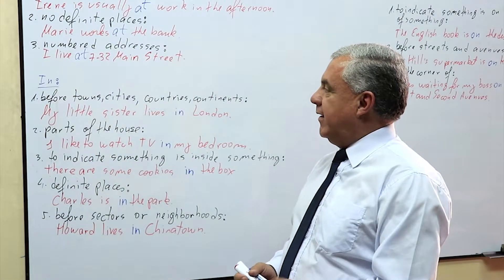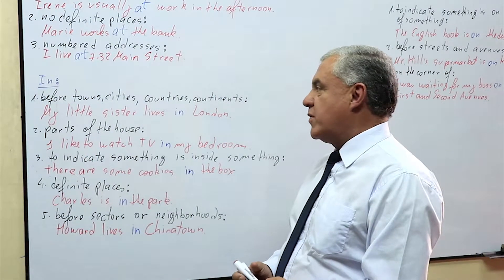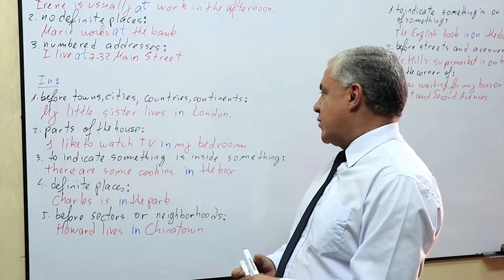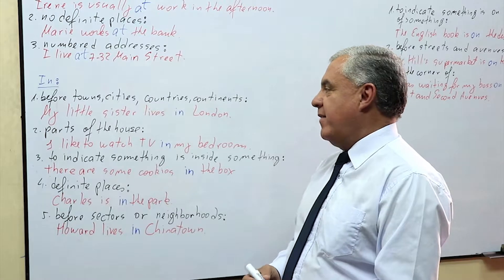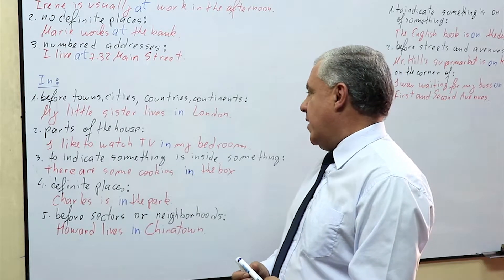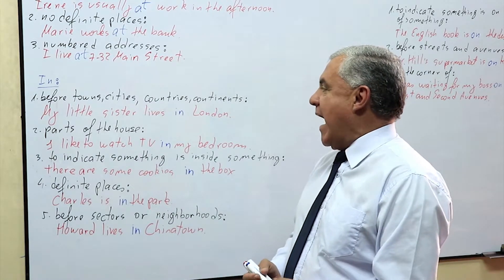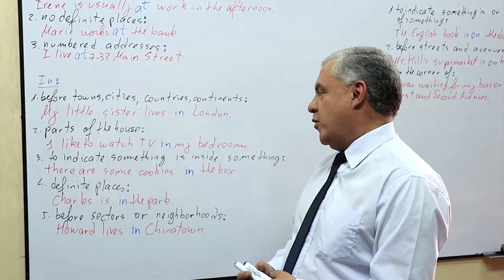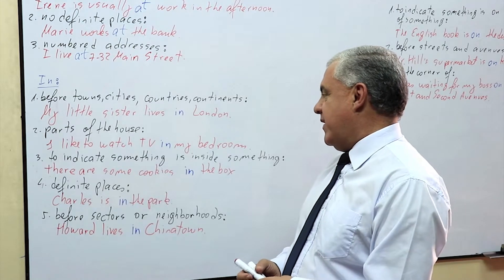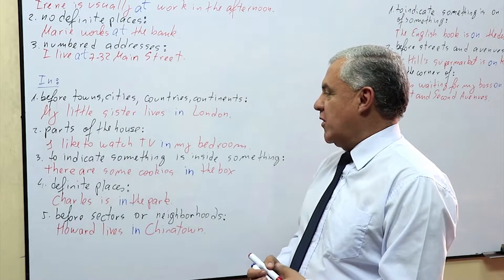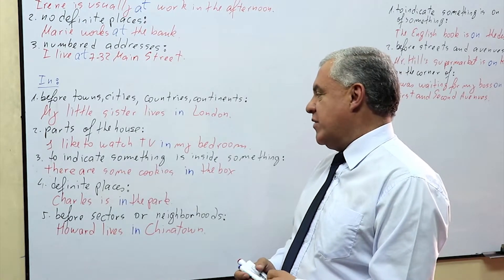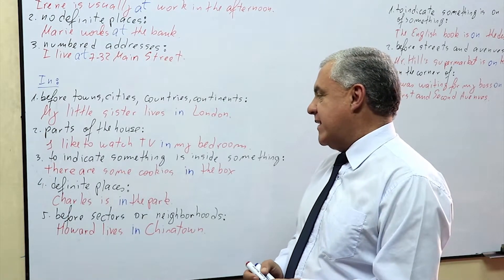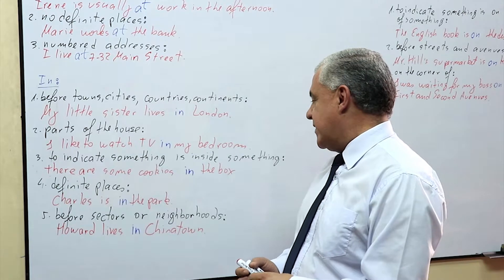'In' is used before towns, cities, countries, and continents. For instance, my little sister lives in London. Another use of 'in' is with parts of the house — for example, I like to watch TV in my bedroom. Also, 'in' is used to indicate that something is inside something — for instance, there are some cookies in the box.